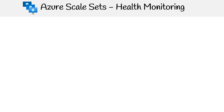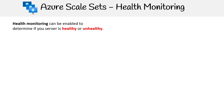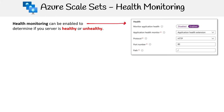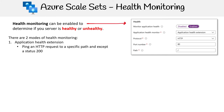Health monitoring is a feature you're absolutely going to want to turn on. What it does is it determines whether your virtual machine instance is healthy or unhealthy, so you have the option to disable or enable it. It comes in two different modes: the application health extension, which is what we're seeing on the right hand side here, where you ping an HTTP or HTTPS request with a specific path and expect back a specific status.